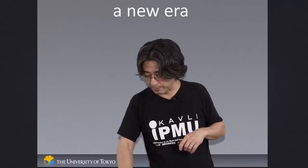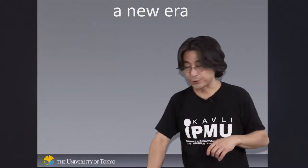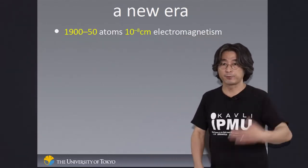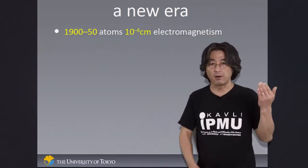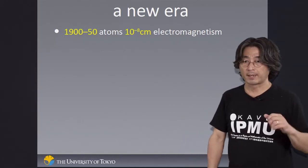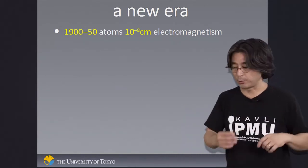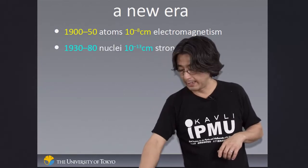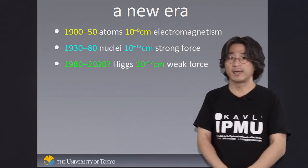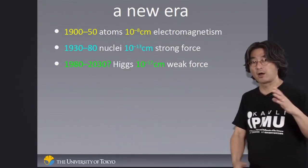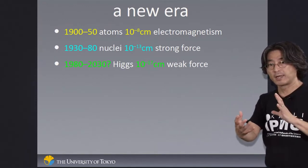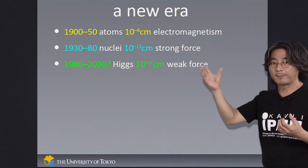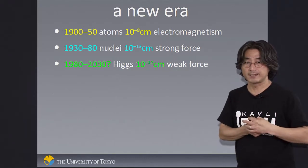There is still much to be done, but one thing is clear: we have just entered a new era. In the first half of the 20th century, we understood electromagnetism — at the scale of 10⁻⁸ centimeters. In the second half, we understood the strong force, which binds nuclei together, at a scale of 10⁻¹³ centimeters.